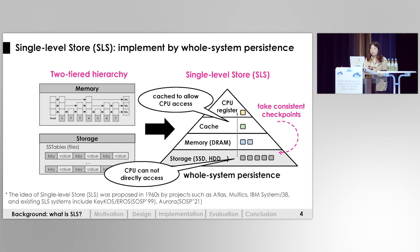However, since the CPU cannot directly access objects in storage devices, they are cached in other layers to allow CPU access. The operating system takes consistent checkpoints to transparently persist the whole system.